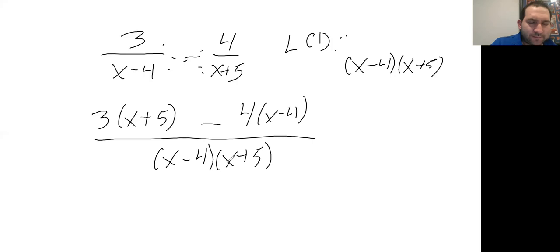Now we're going to simplify just the numerator. Distribute, so we have 3x + 15.